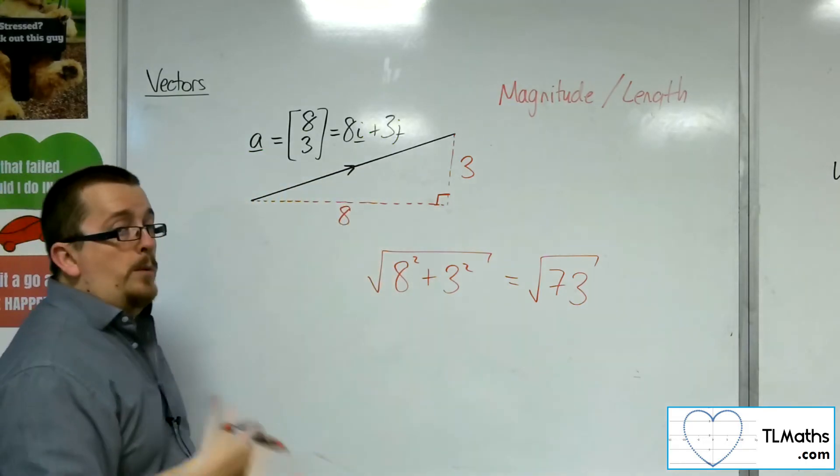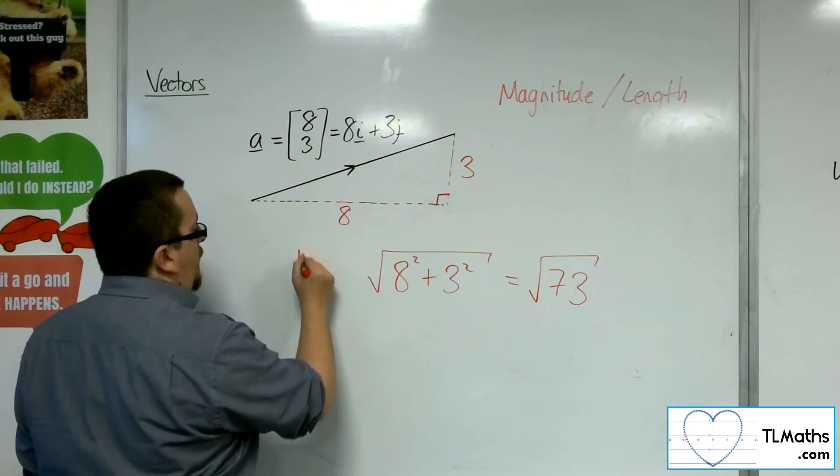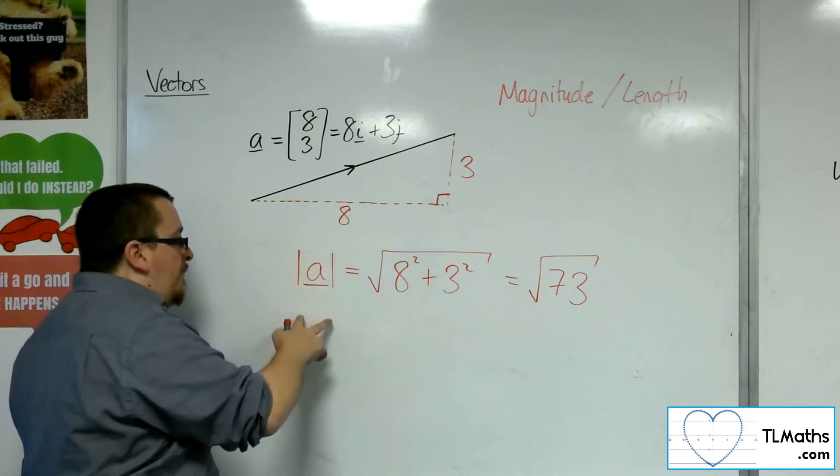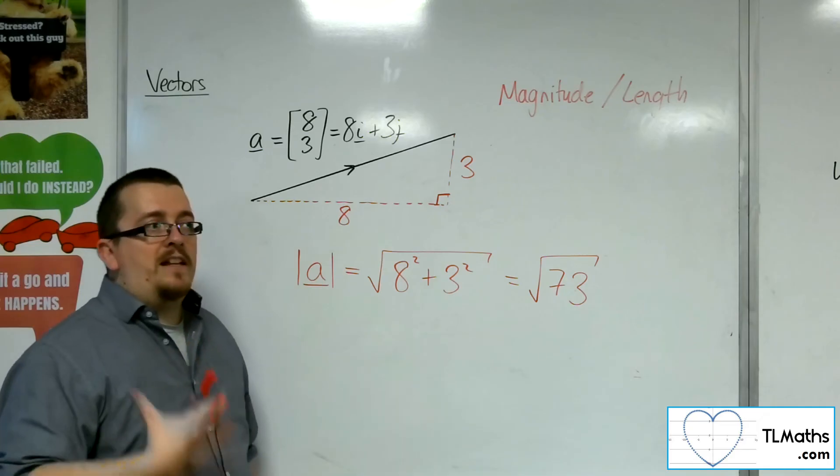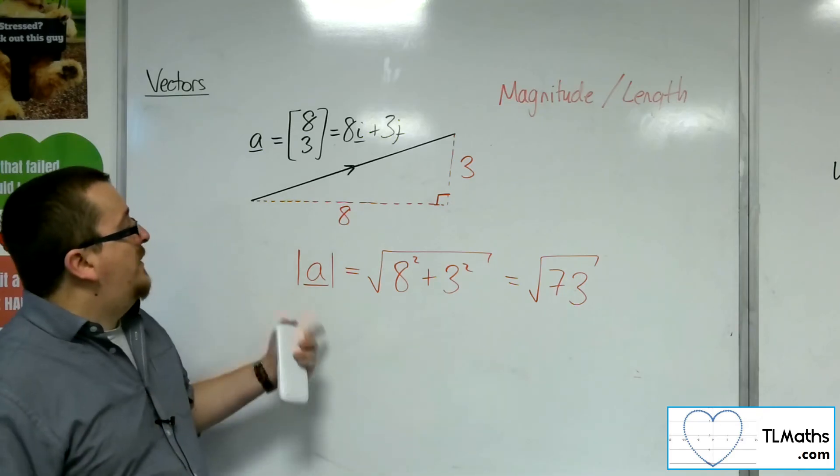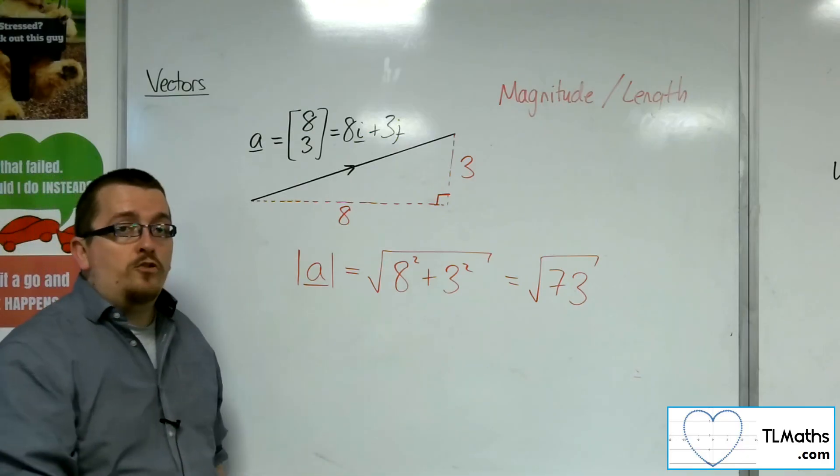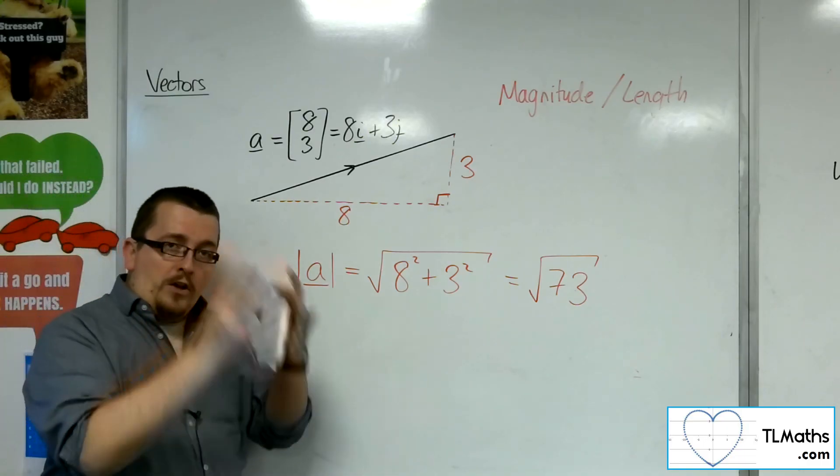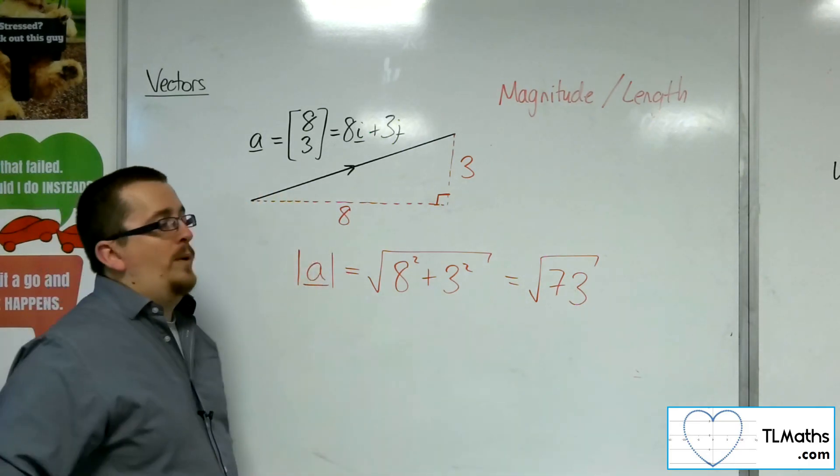Now, notation-wise, how we write that down is we can put modular signs either side of the vector a. So when we put these vertical lines either side of a, we are talking about its length, its magnitude. Whereas a has a vector quantity, because it has both magnitude and direction, the modulus here makes sure that we're just focusing on the magnitude. And so what we get is just a number, a scalar. And that's how we can calculate it.